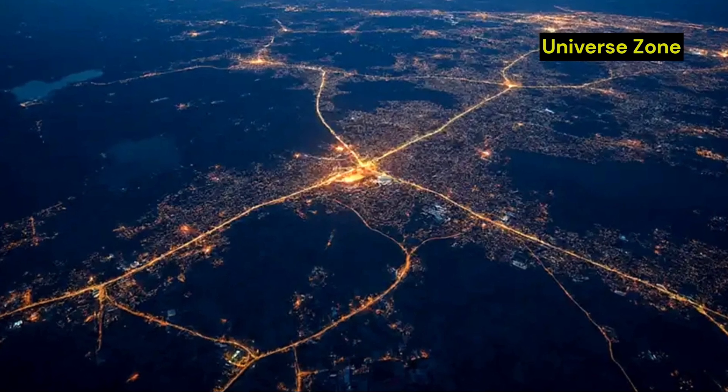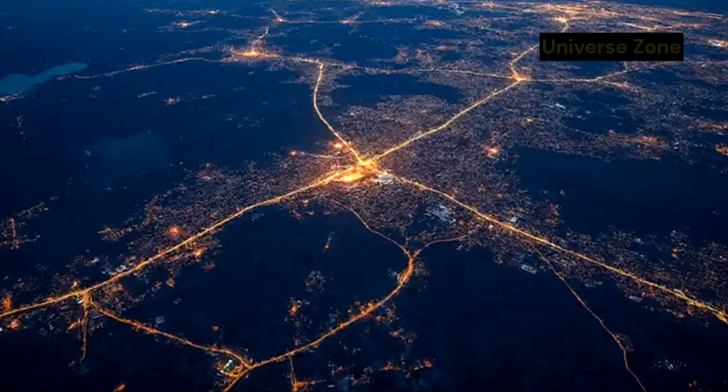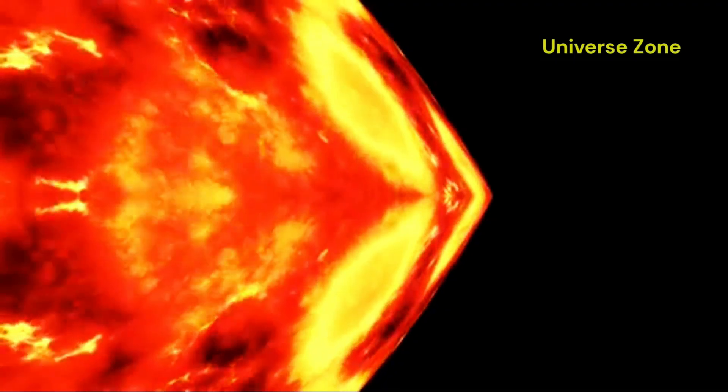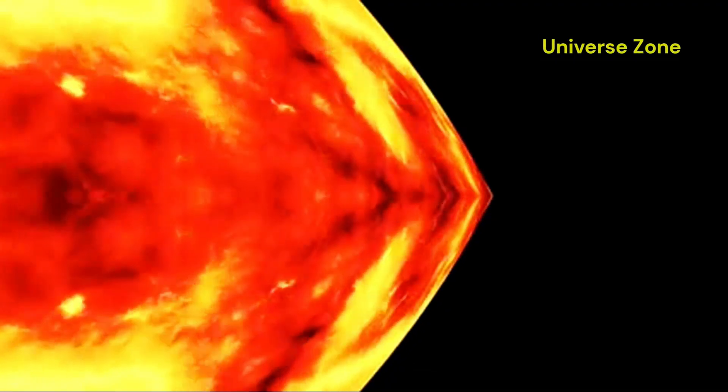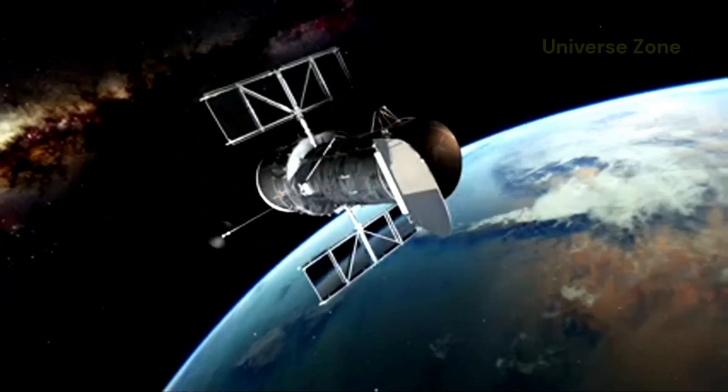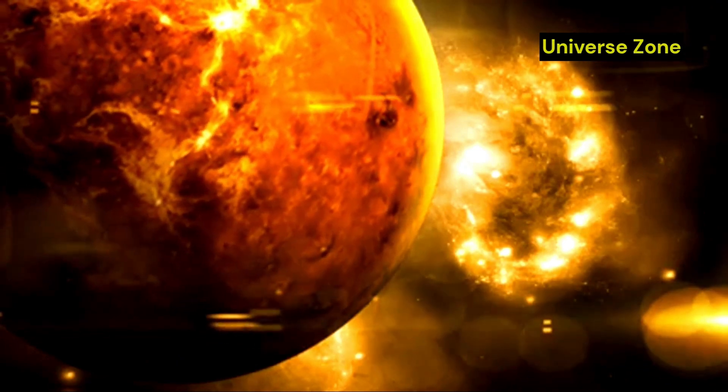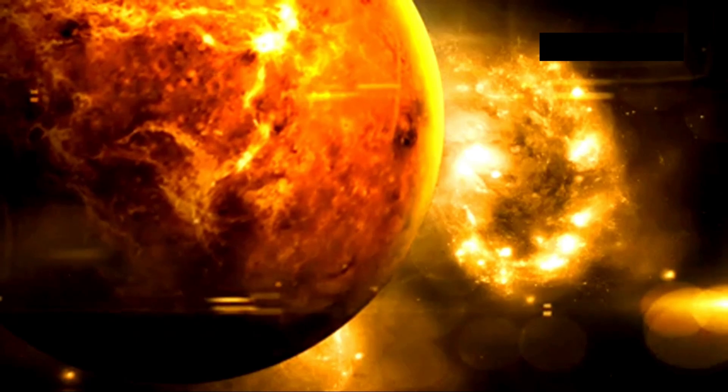One of the most interesting things about the new image is that it shows a faint glow on the dark side of Proxima b. This glow is thought to be caused by heat from the planet's interior escaping into space.